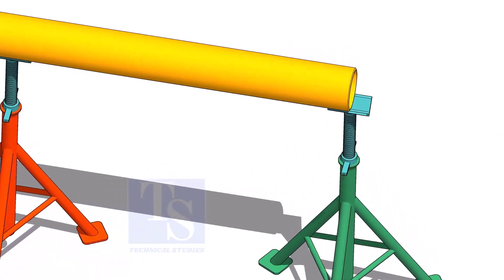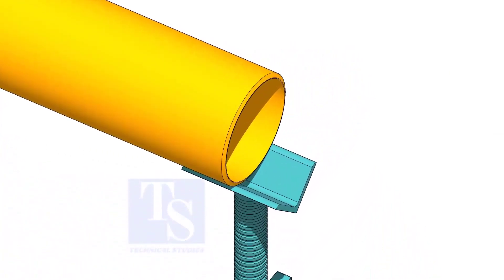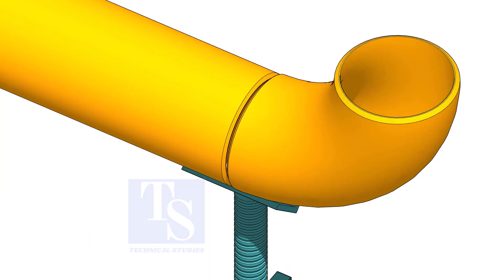Put the pipe on stands and level it. Put the elbow and the gap rod. Correct the overlap and tack weld on both sides.